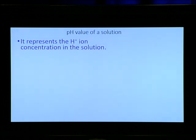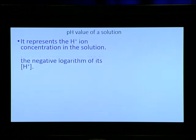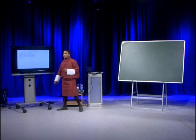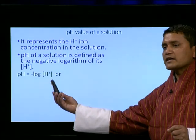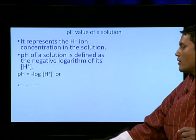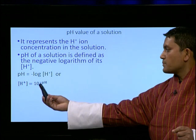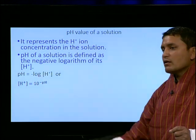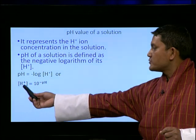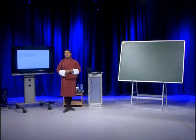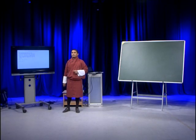pH represents the hydrogen ion concentration present in a given solution. Mathematically, it is defined as the negative logarithm of H+ ions. So pH = -log[H+], and this log is to the base 10. Therefore, if you have to find out the H+ ion from this equation, it becomes [H+] = 10 to the power minus pH. That's how we calculate the pH of a given solution.